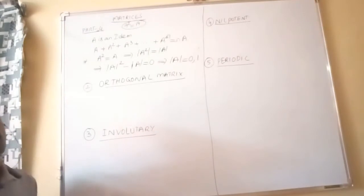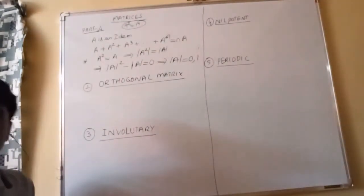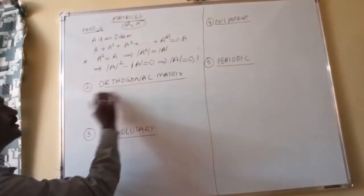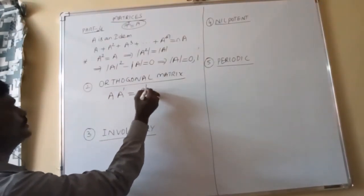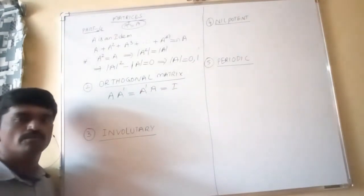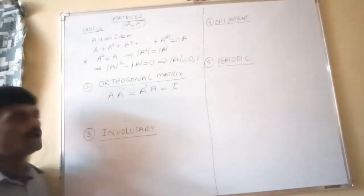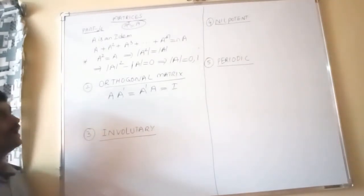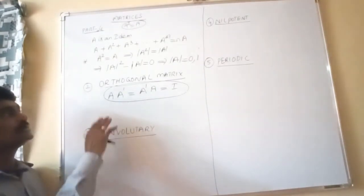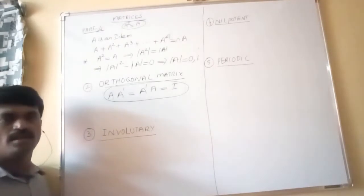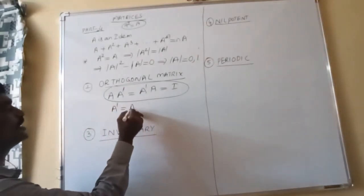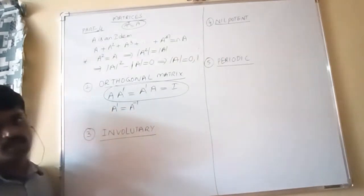Next definition: orthogonal matrix. A square matrix A is said to be orthogonal if A·A' = A'·A = I, where A' denotes the transpose of A. This looks like A·A⁻¹ = I, meaning for an orthogonal matrix, the inverse is the same as the transpose: A⁻¹ = A'.